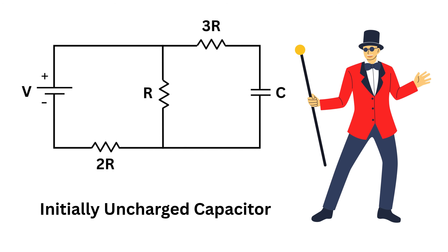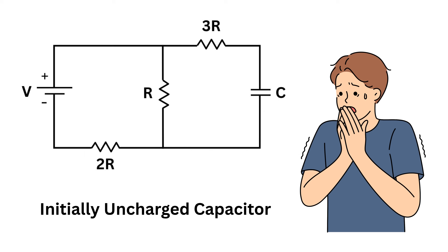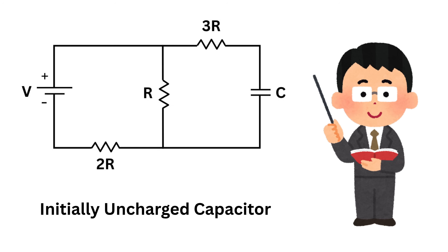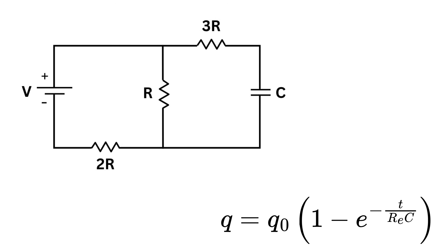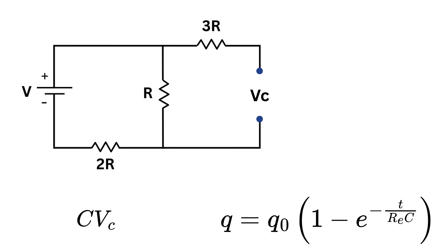Now let's talk about a trick to find charge across capacitors in tricky circuits. The circuit may look complicated, but you have all the tools needed. The charge Q of the capacitor is still equal to Q0 times one minus E raised to minus T divided by R-equivalent times C. First, to find Q0, redraw the circuit assuming the capacitor is replaced by an open wire — that is, no current flows through it in steady state. Then find the voltage across the capacitor, multiply it with C, and you get the maximum charge stored.